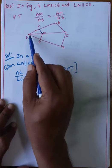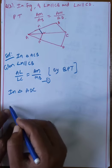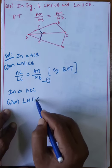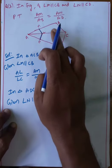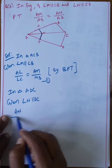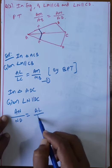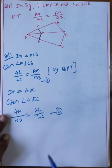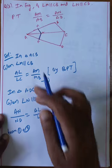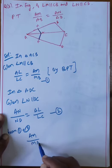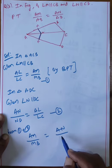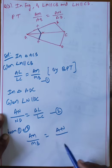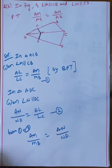In triangle ADC, LN is parallel to DC. By BPT, this line divides the remaining two sides in the same ratio: AN by ND equals AL by LC. This is equation number two. From equations one and two, AM by MB equals AN by ND.